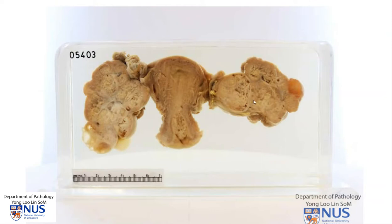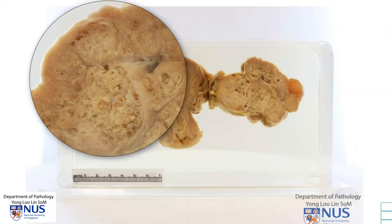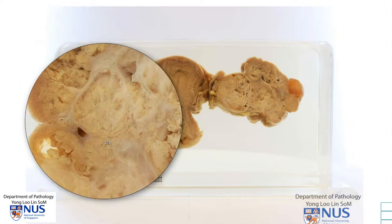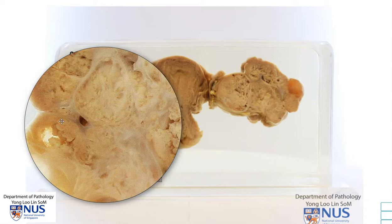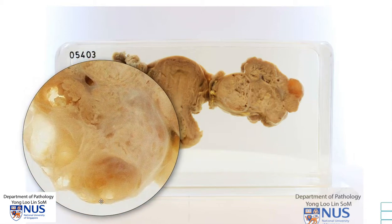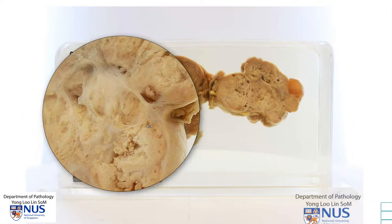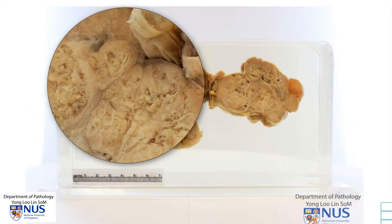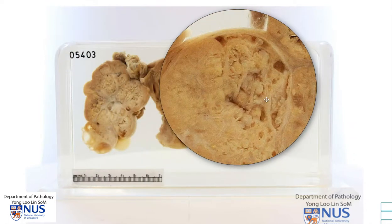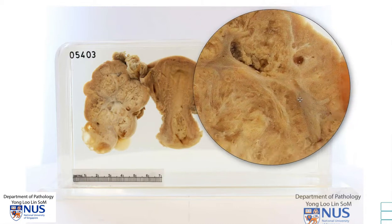Looking back at the cut surface, we can see in the right ovary that there is a nodular mass which is whitish to yellowish. Some areas actually appear a little bit papillary in architecture and we can see that there are some cystic areas, but most of the tumor is quite solid in appearance. Similarly in the left ovary we can also see the same appearance.